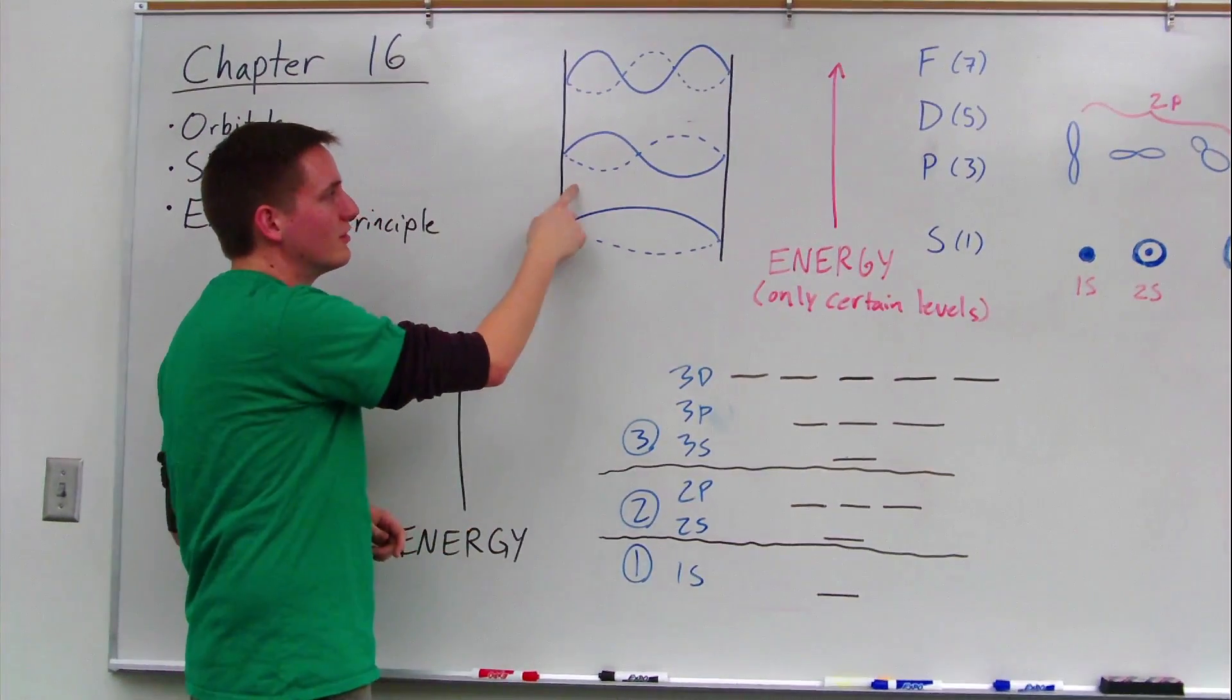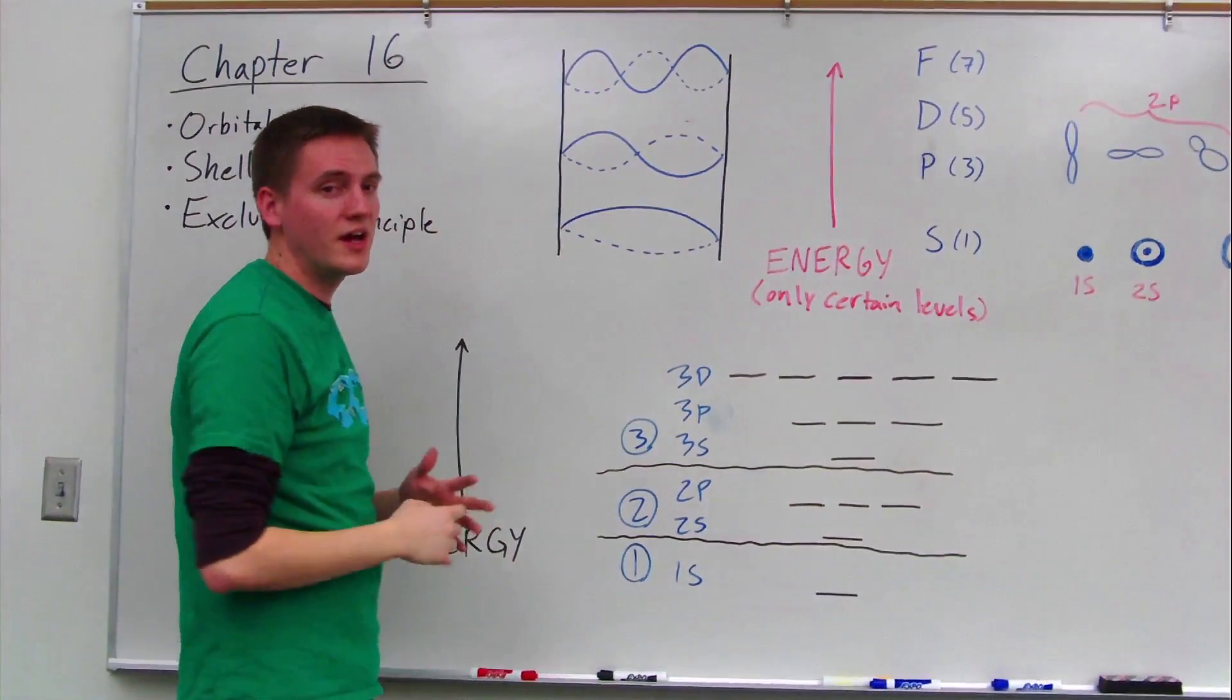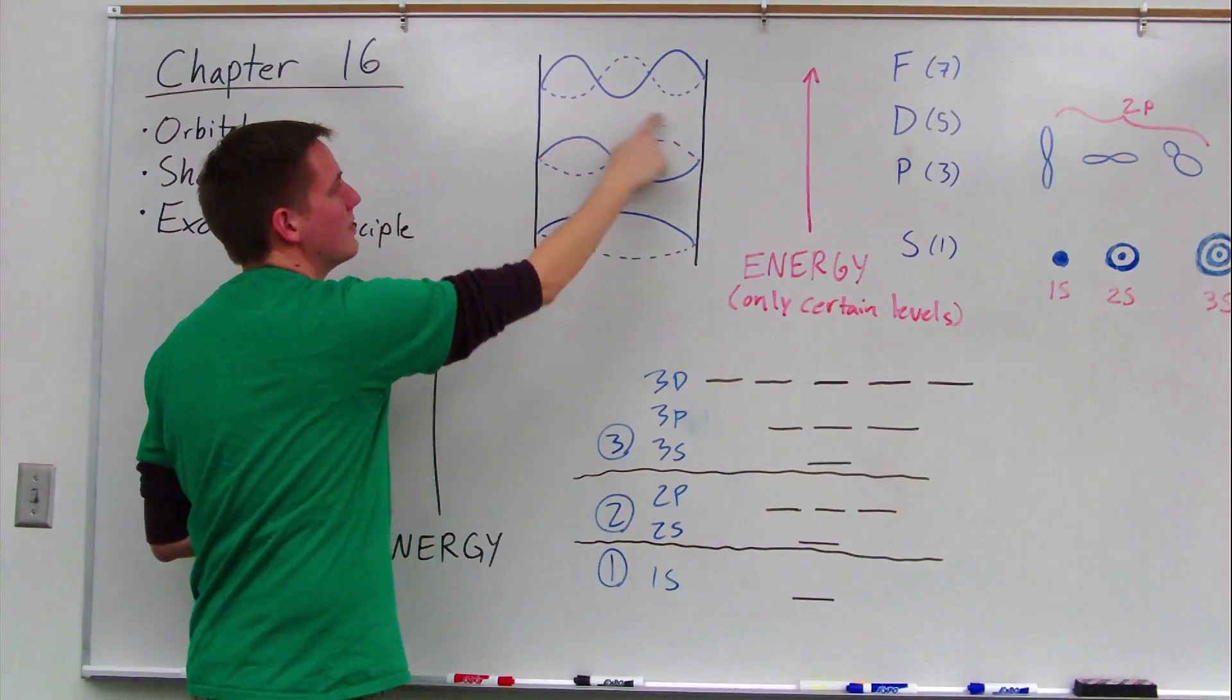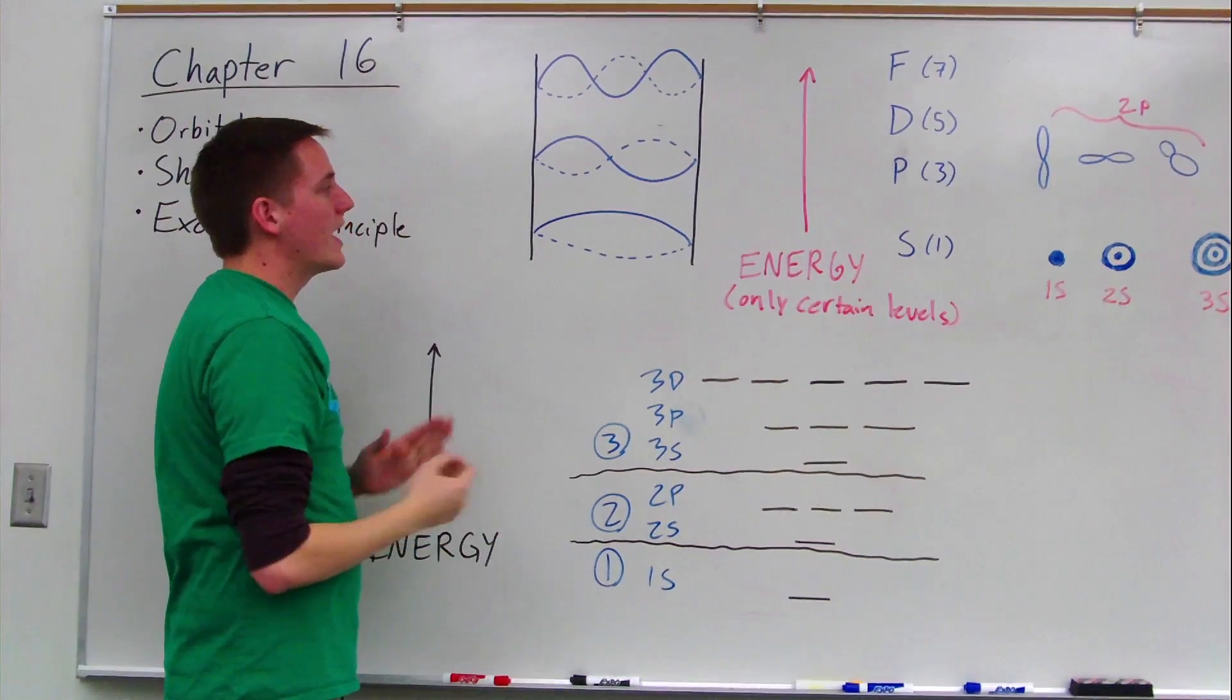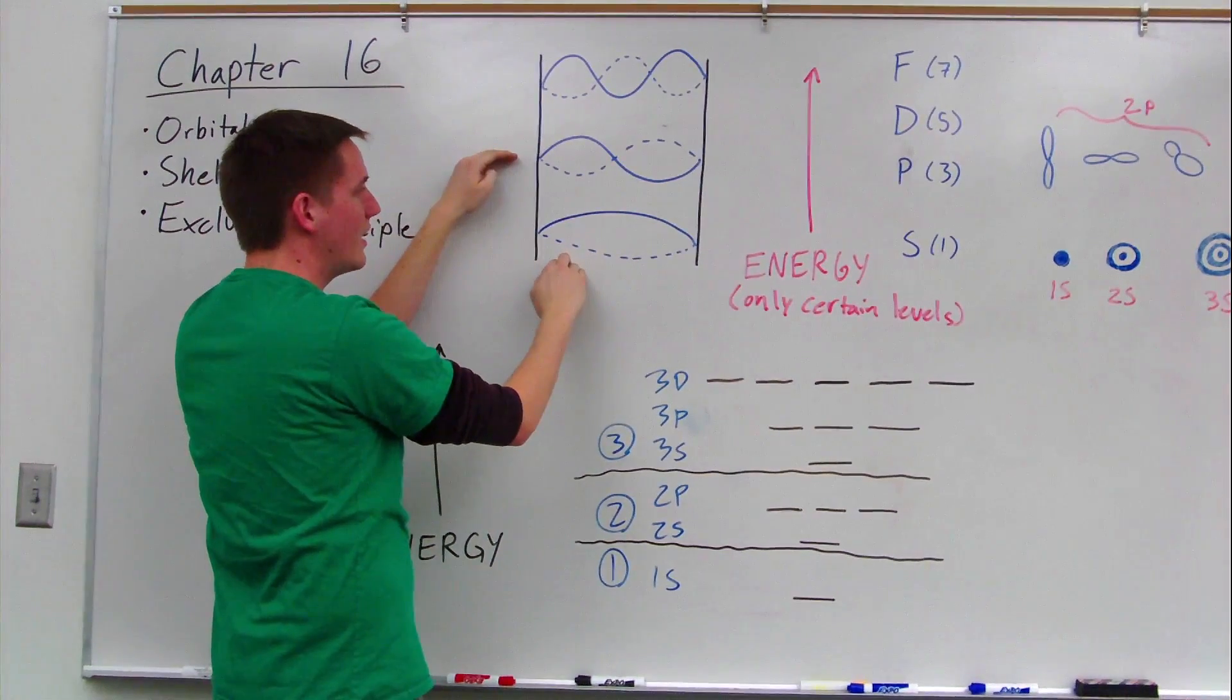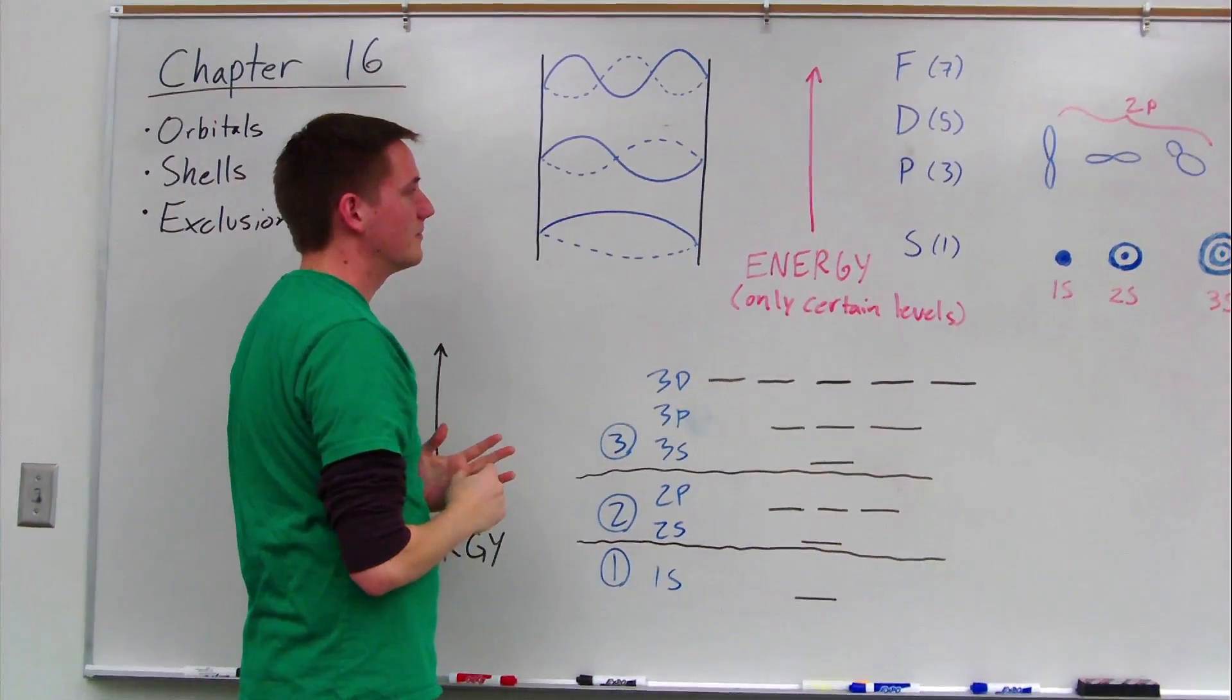If we put a little bit more energy into it, we can make a shape that looks like this. It's a little bit more complex, and it has a node which represents an area of destructive interference. Put even more energy into it, and we get another shape. It's a little bit more complex, this time with two nodes. And note that it's not possible to have a standing wave in between these two. There's not one in between that can fit.